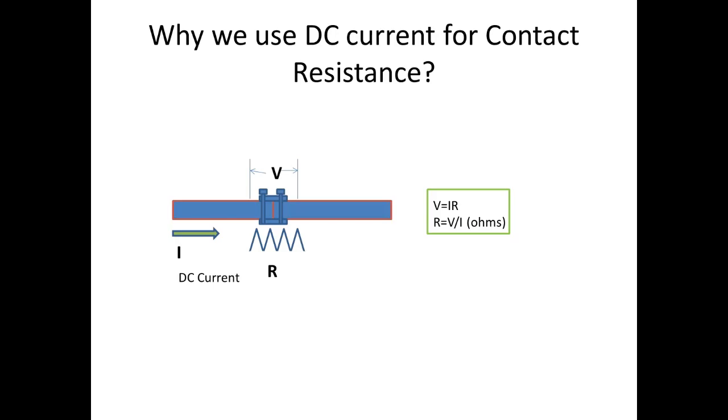Also, in AC current there will be inductance value on it, so the voltage drop will be a little higher than with DC current. When you go for DC current, it will be very easy to find the resistance value when we compare to AC. So we are going for DC current for finding contact resistance.